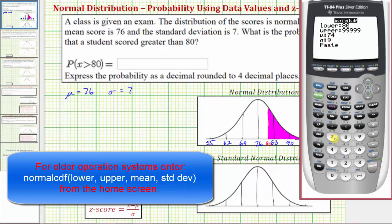Mu is the mean of 76, so 76, enter. Standard deviation is seven, so sigma is seven. Enter. On paste, we press enter again.